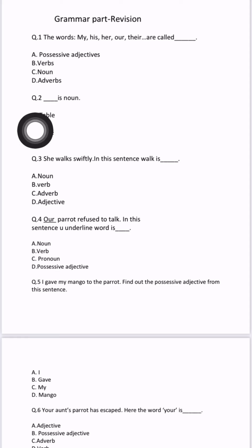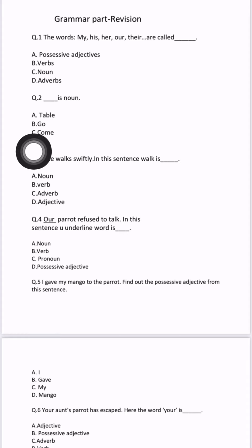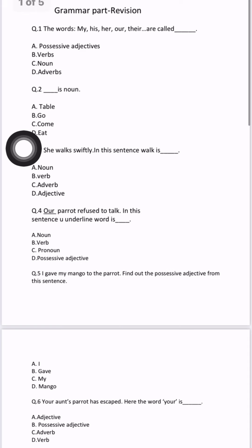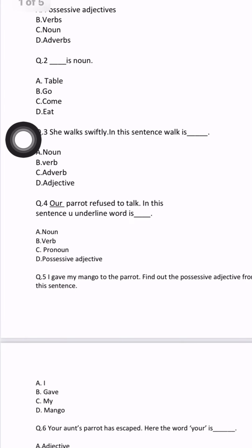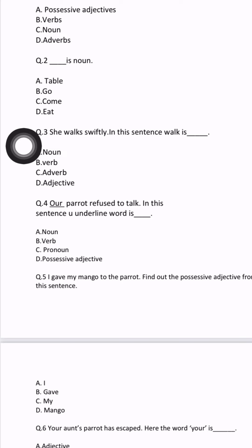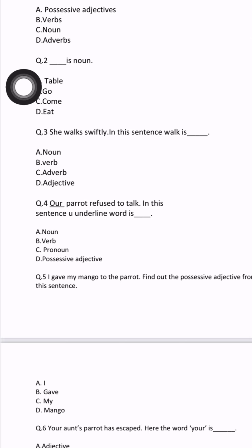Question number 2: blank is a noun. Some options are given — A: table, B: go, C: come, D: eat. Noun means name. If we have to tell the name of any person, thing, class, or object inside a class, all those are nouns. So table is a noun — table is the name of a thing, that's why table is a noun.